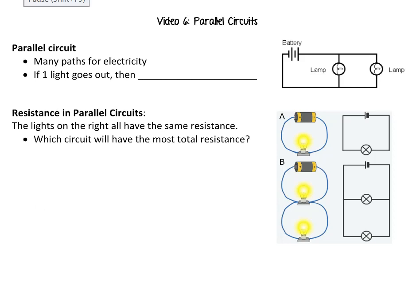Parallel circuits are where you have more than one path for the electricity to follow. You might have a light bulb, and the electricity could come out of the battery, do a fully closed loop through that light bulb, and come right back. But the electricity could also go another way — skip the first light bulb, go through a second light bulb, and come right back to the battery. So we'd say those two lights are in parallel, with two different paths for the electricity to follow.